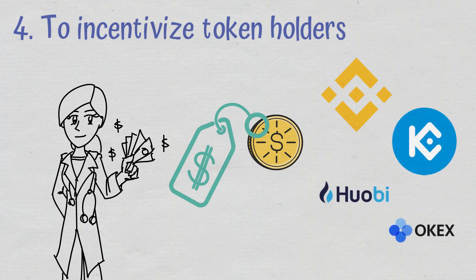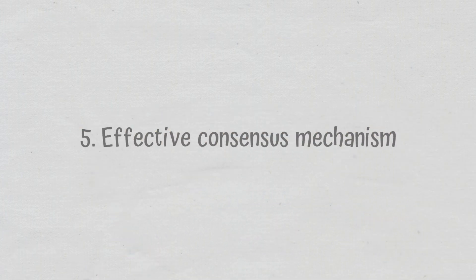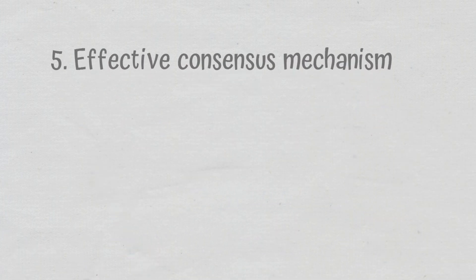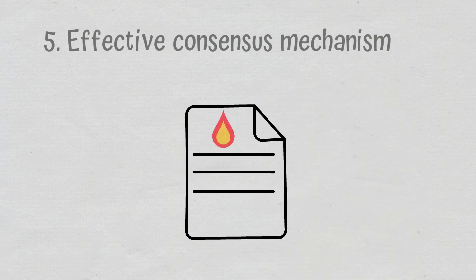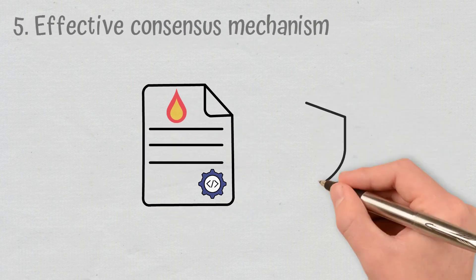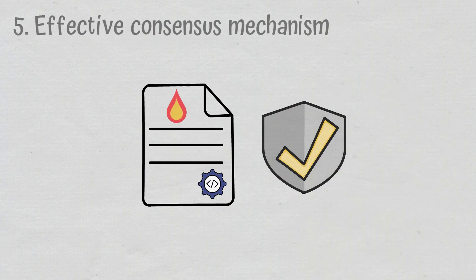Effective Consensus Mechanism. The proof-of-burn mechanism is a consensus algorithm implemented by a blockchain network. It is used for validating transactions on the blockchain.